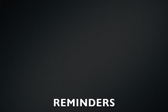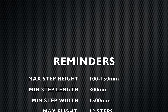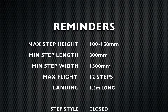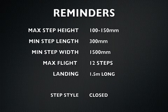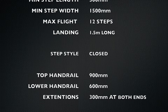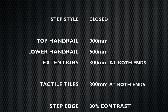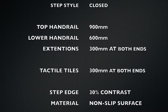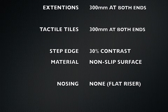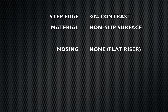Reminders: maximum step height 100–150mm; minimum step length 300mm; minimum step width 1500mm; maximum flight 12 steps; landing 1.5m after 12 steps; step style — closed. Top handrail should be 900mm from the middle of the step, lower handrail 600mm. Extensions at both ends 300mm from the bottom and top. Tactile tiles 300mm at both ends. Step edge 30% contrast. Material: non-slip surface. Nosing: none — the riser should be flat edged.